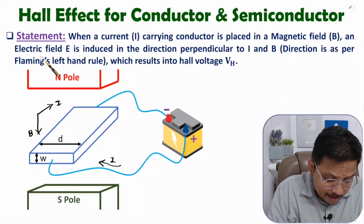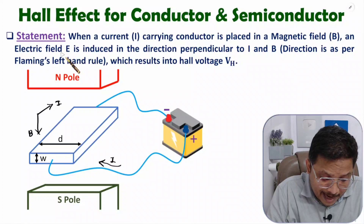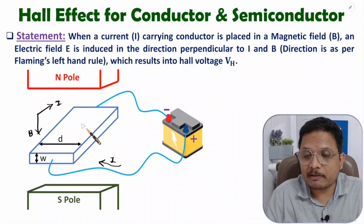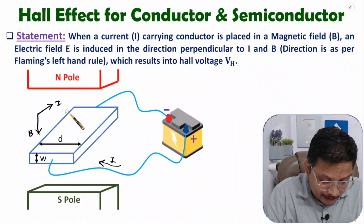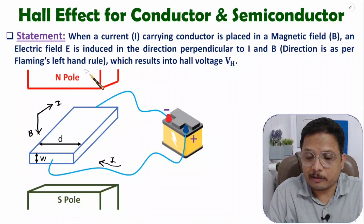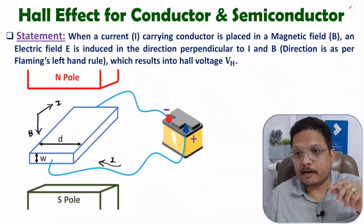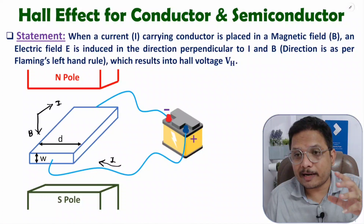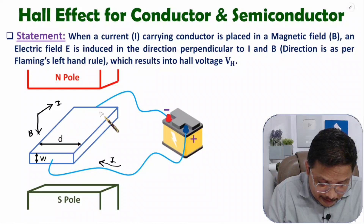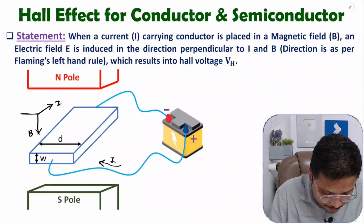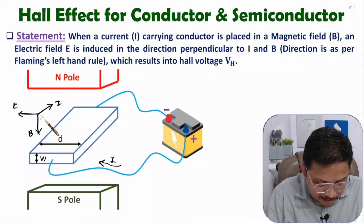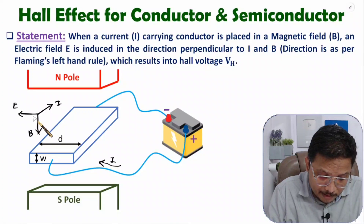Because of this, there will be an electric field generation, and that electric field will be perpendicular to both the current and the magnetic field. Inside this material there will be generation of an electric field that is perpendicular to both current and magnetic field. Its direction will be as per Fleming's left-hand rule. Using the left hand, you identify the direction of the electric field — inside this material the electric field happens in this direction as per Fleming's left-hand rule.